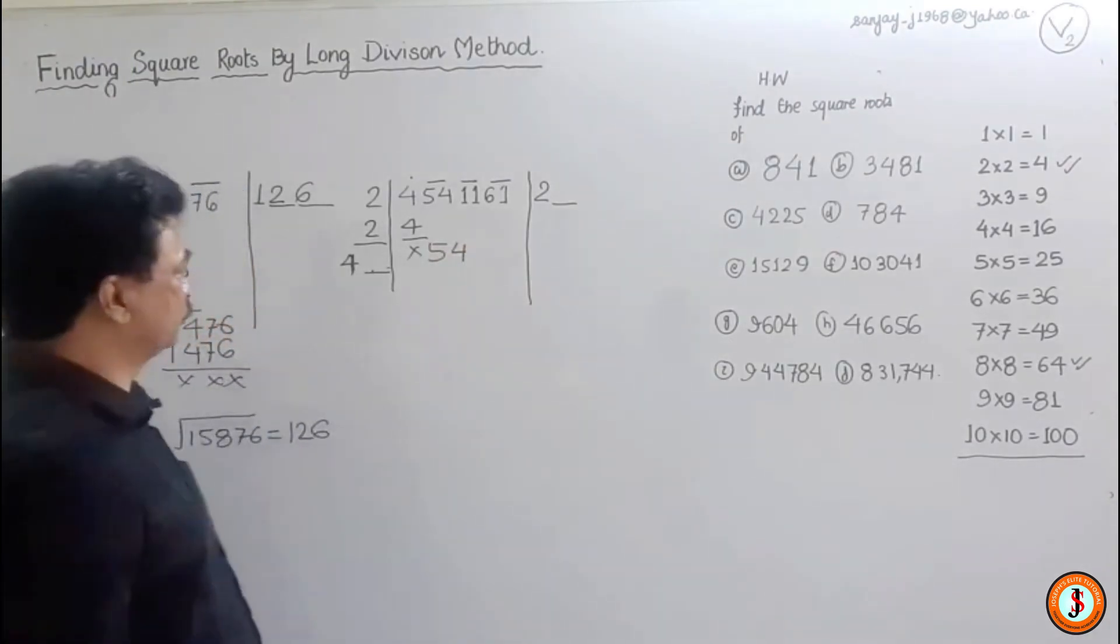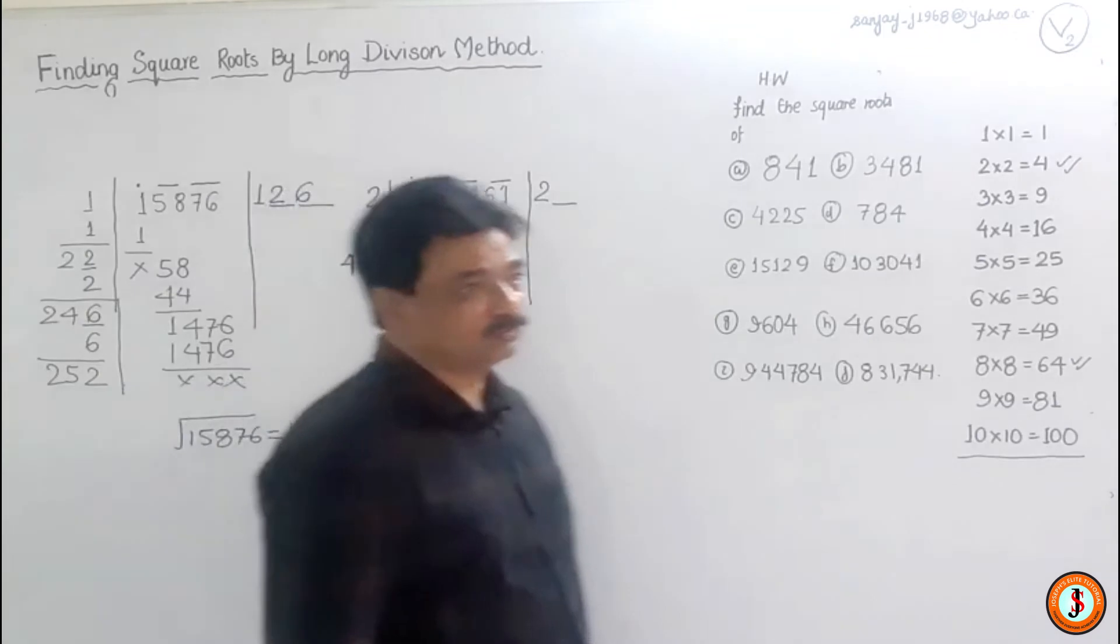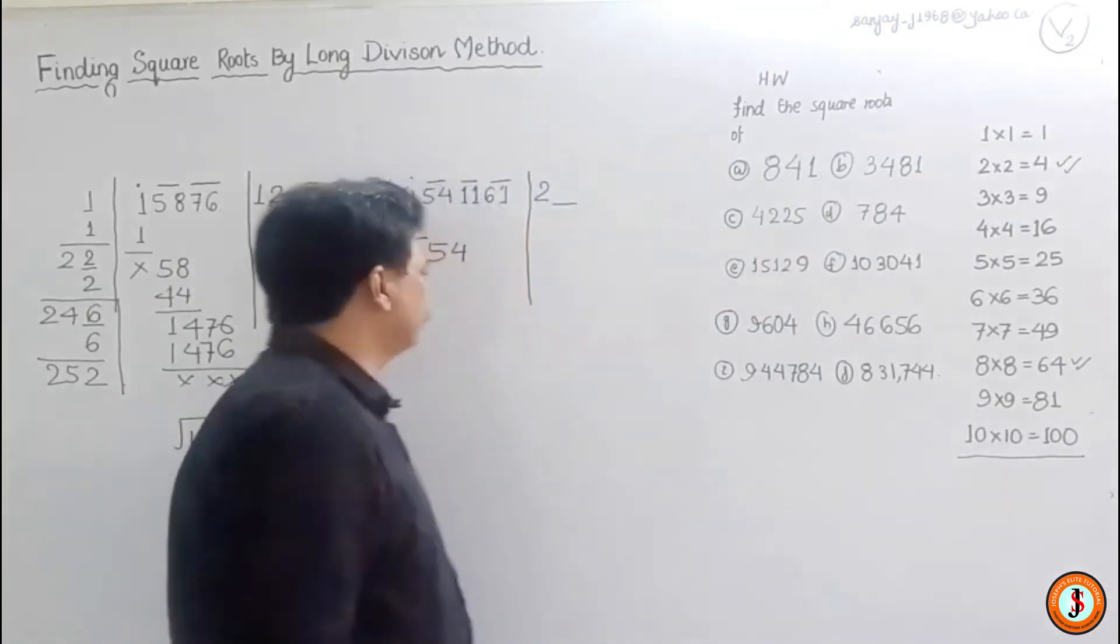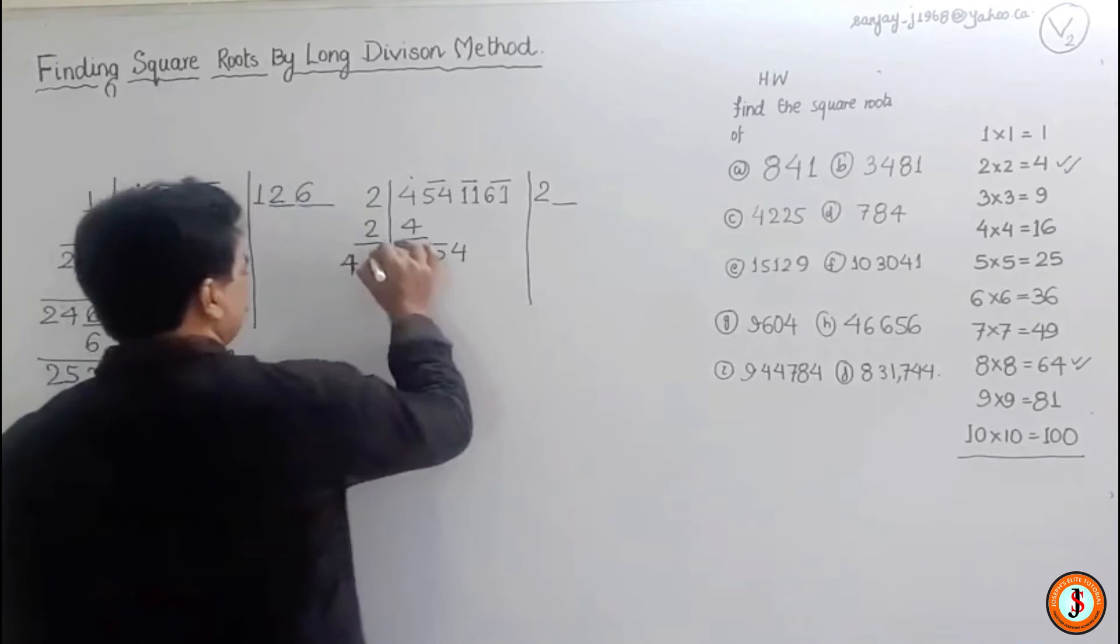And obviously now forty-one times one is forty-one. And more than that, forty-two times two will be eighty-four. We have 54 here, so we put one.